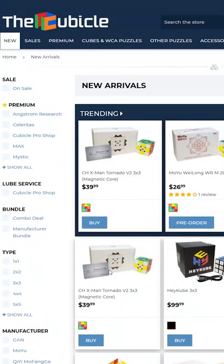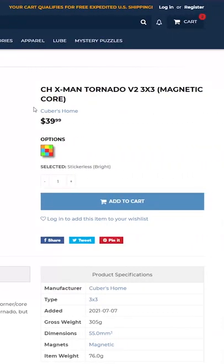This core magnetic version of the Tornado V2 is available exclusively at the Cubicle for $39.99.